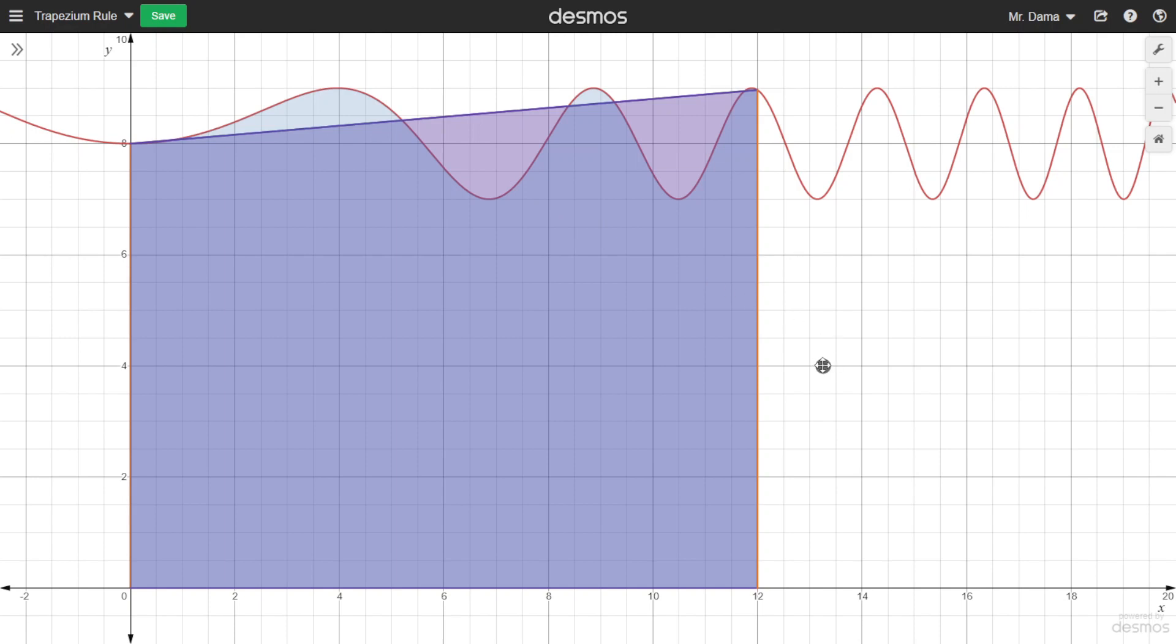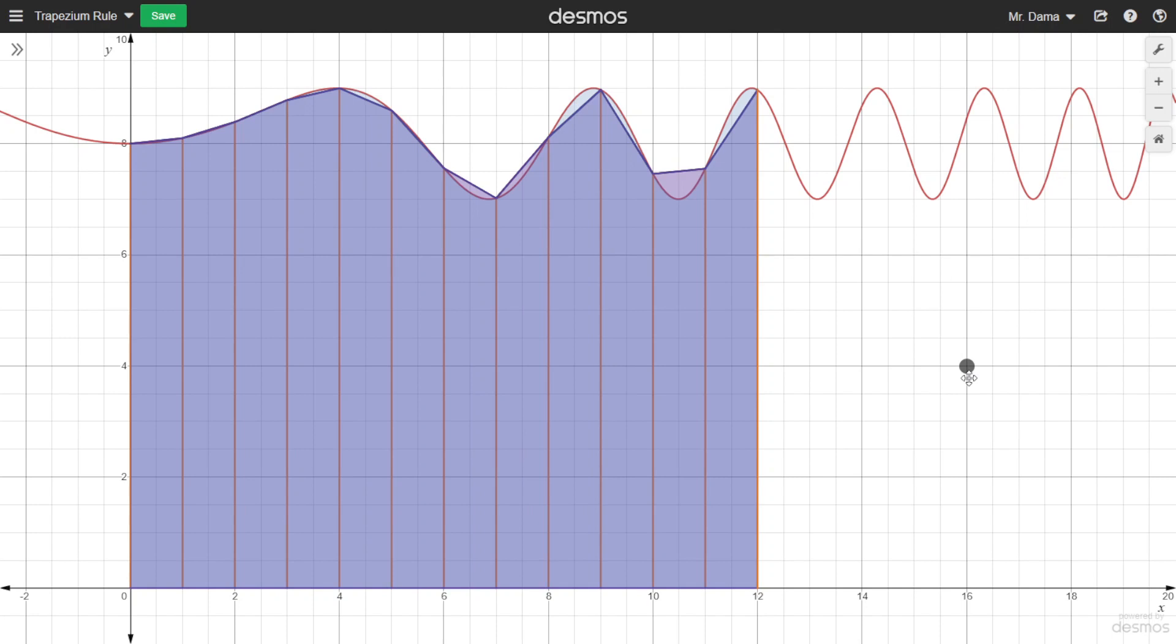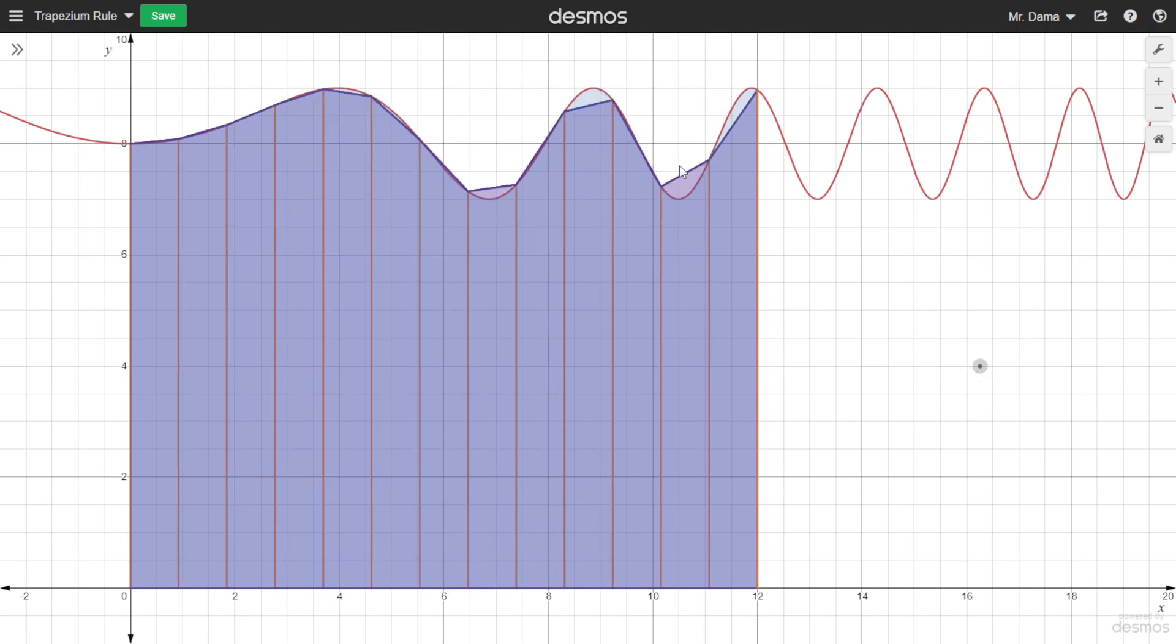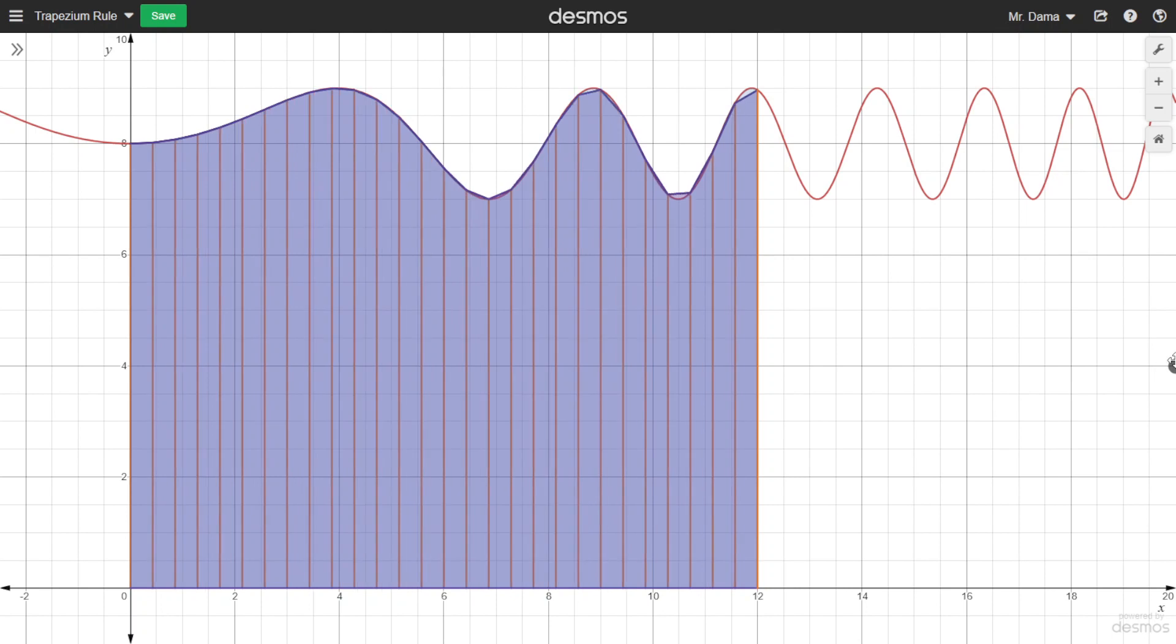So let's see what happens if I put more trapeziums. Is that a better approximation? I don't know but let me do more. As you see, the more trapeziums I put, the more strips there are and the closer the approximation is. You can still see there's some error here and here but the more trapeziums there are, the less error there is. And so eventually I might get no error whatsoever.